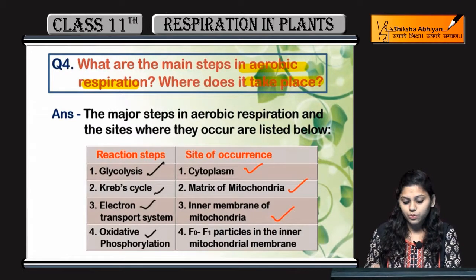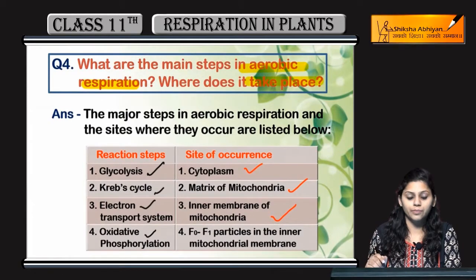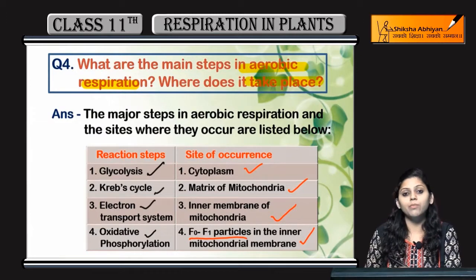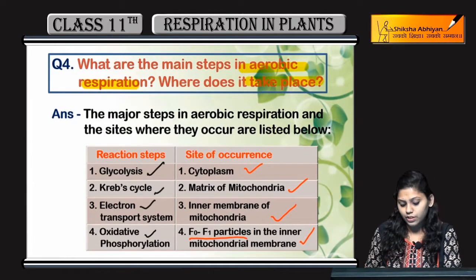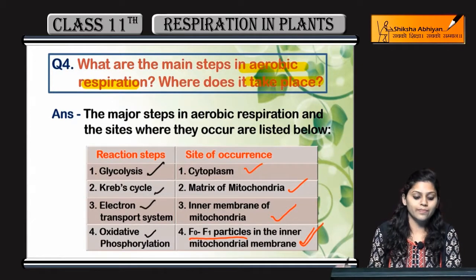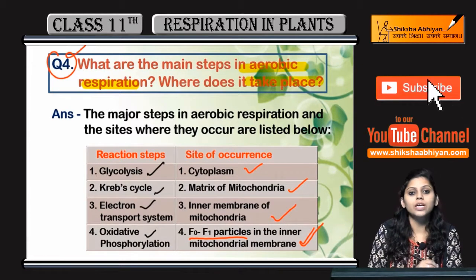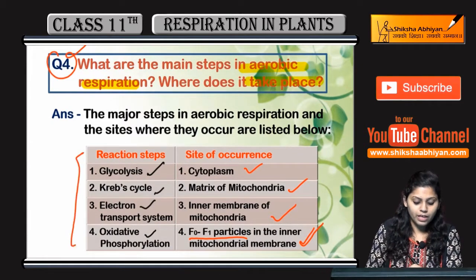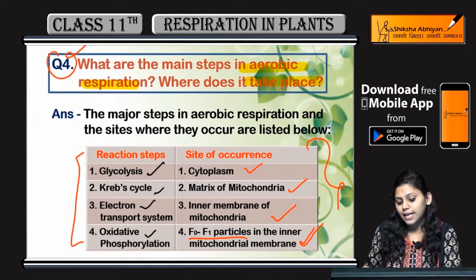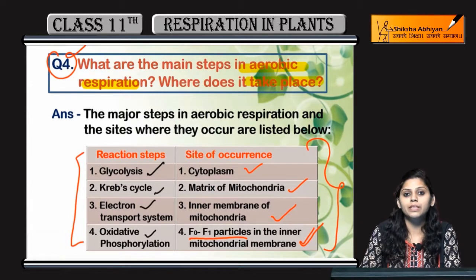The electron transport system takes place in the inner membrane of mitochondria, and oxidative phosphorylation occurs at the F0 and F1 particles located on the inner mitochondrial membrane. So this is question number four, in which we discussed five main steps of aerobic respiration and their respective sites.